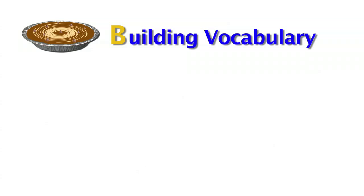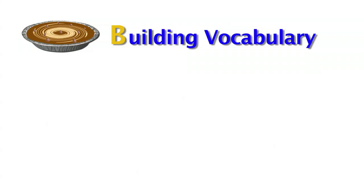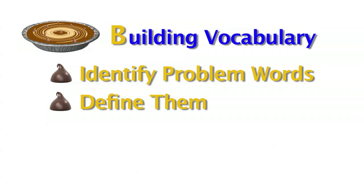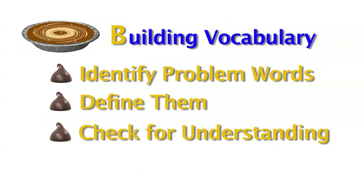The B is for building vocabulary. This is a really important area because too often our students get hung up on words they don't know, and as a result their comprehension struggles. We need to take a few moments before we read to pick out four or five words that are going to cause students struggles, identify them, define them, and make sure our students know them when they're reading that text.